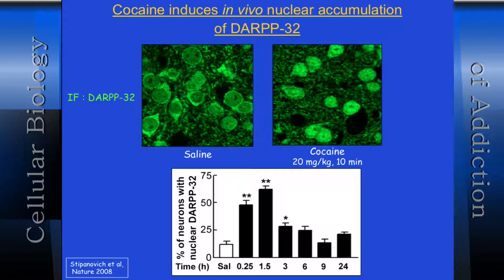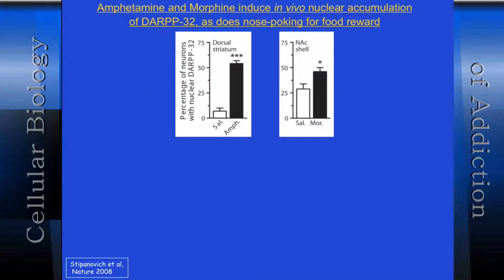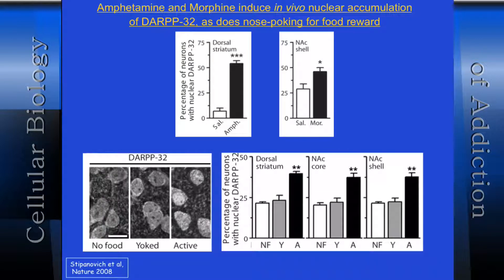It happened in response to various drugs — amphetamine, morphine — in the dorsal striatum and nucleus accumbens shell. It also happened in response to nose-poking for food reward, comparing active versus yoked animals trained to nose-poke, where DARPP appeared to move from the cytosol into the nucleus in the ventral striatum.